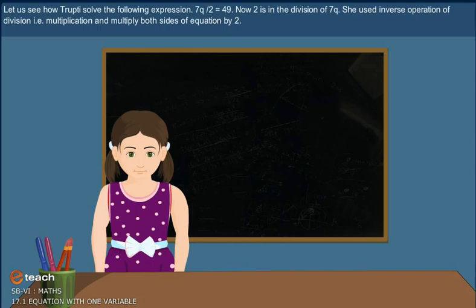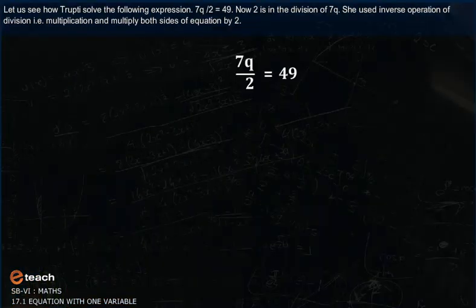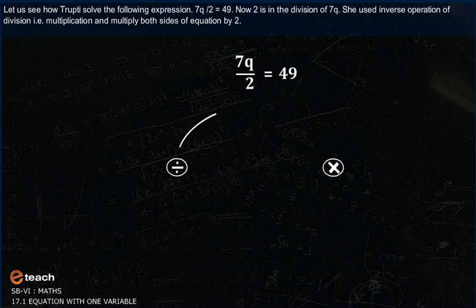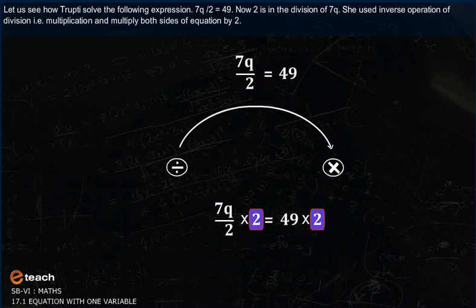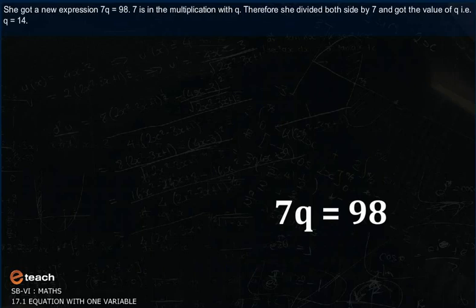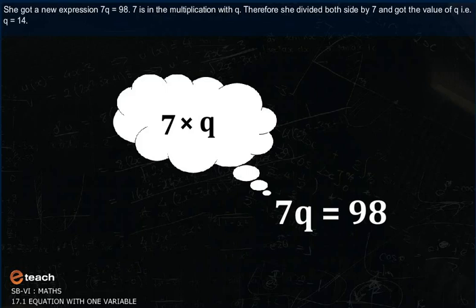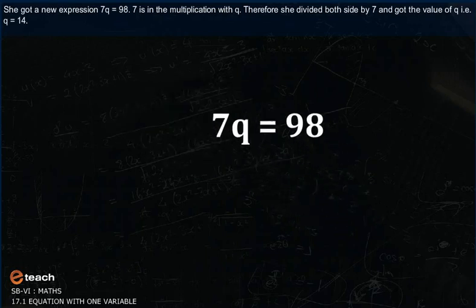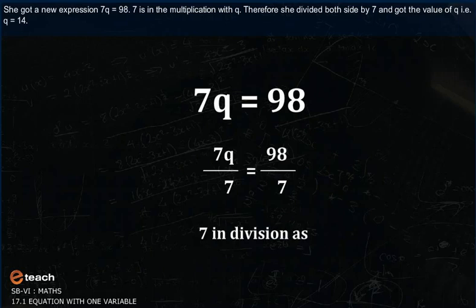Let us see how Trupti solved the following expressions. 7Q upon 2 is equal to 49. Now 2 is in the division of 7Q. She used inverse operation of division that is multiplication, and multiply both sides of equation by 2. Here 2 is in numerator and denominator therefore cancels each other. And product of 49 and 2 is 98. She got a new expression 7Q is equal to 98. 7 is in the multiplication with Q. Therefore, she divide both sides by 7 and got the value of Q that is Q is equal to 14.